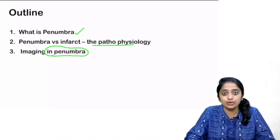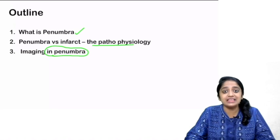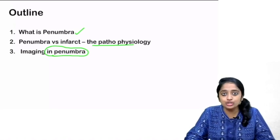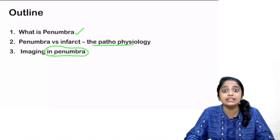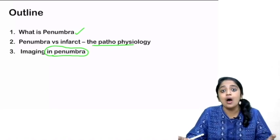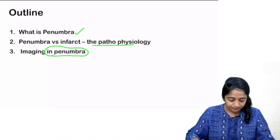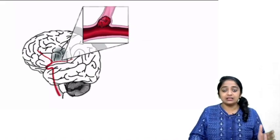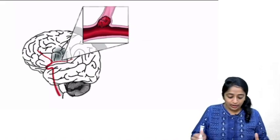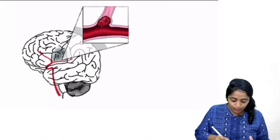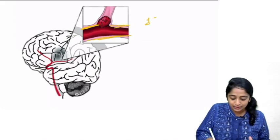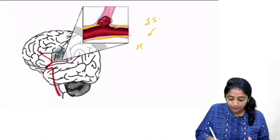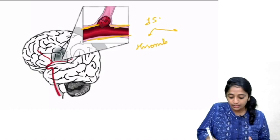First and foremost: why do you need penumbra? If only penumbra is there in imaging, can you reassure that giving reperfusion will bring out significant impact on the outcome of the patient? So let's take a scenario when a particular blood vessel is blocked by a thrombus — that is known as an ischemic stroke. It can be due to thrombus or emboli.